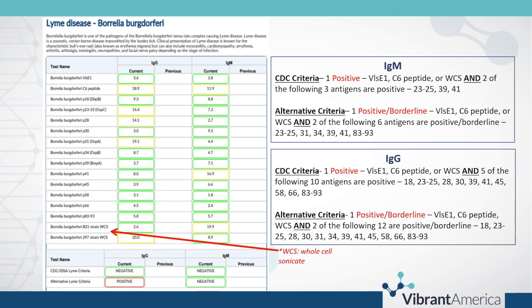The first page of Lyme we are going to come to is for Borrelia burgdorferi. Borrelia burgdorferi is the main spirochete that is causative for Lyme disease. It has two criteria as far as meeting for a diagnosis. The CDC criteria was originally developed as a surveillance criteria, not a diagnostic criteria. It has not been updated over the years with any new research that has come out with tick-borne diseases. Therefore, the lab has come up with an internally validated alternative criteria utilizing CDC samples, and it has been published in a third-party publication, which link is available in your provider portal.